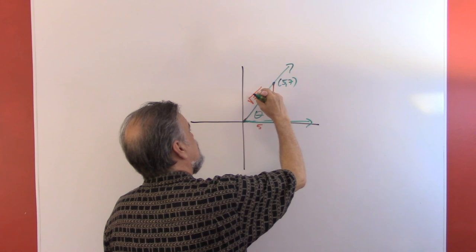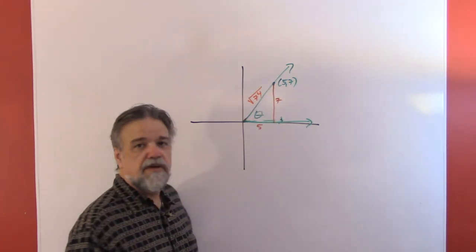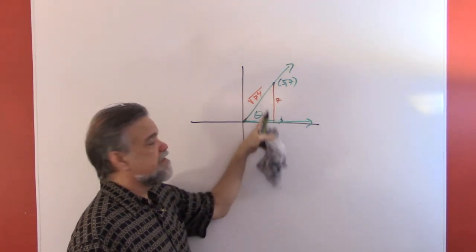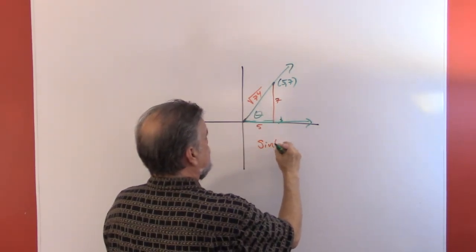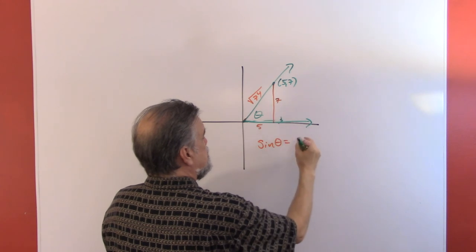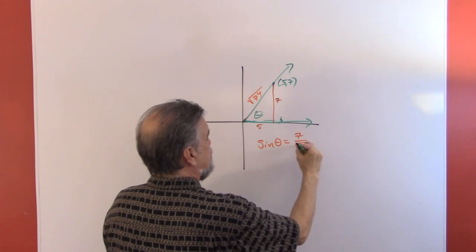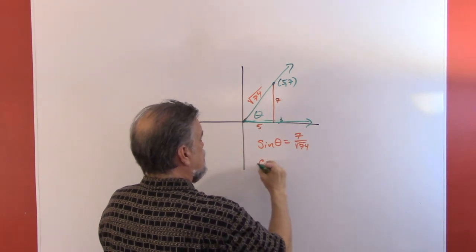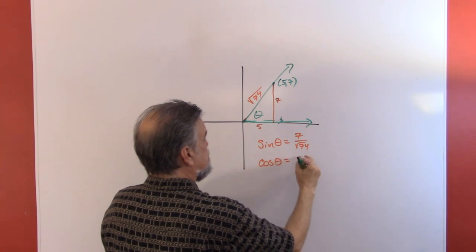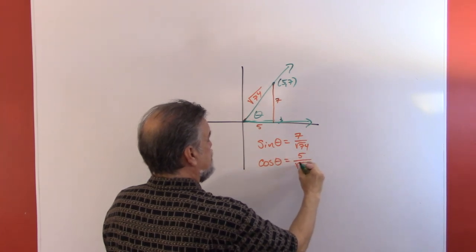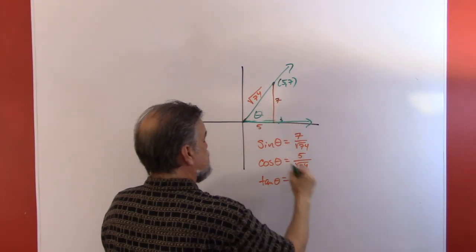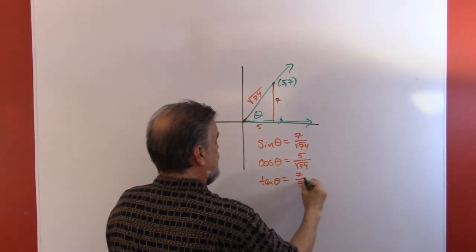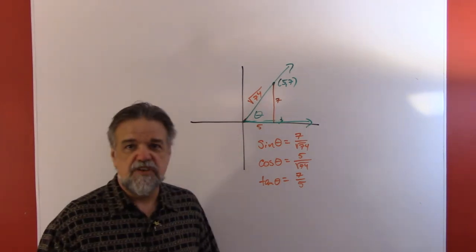Now I've got my opposite, my adjacent, and my hypotenuse, so I can say the sine of theta is 7 over the square root of 74, the cosine of theta is 5 over the square root of 74, and the tangent of theta is opposite over adjacent—that's 7 over 5. Easy enough.